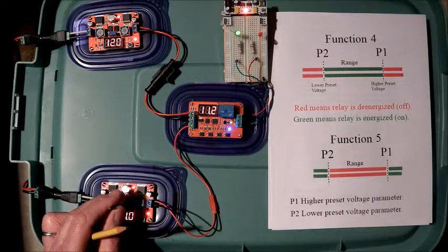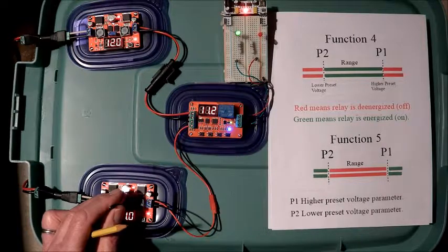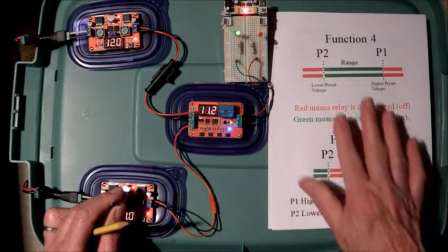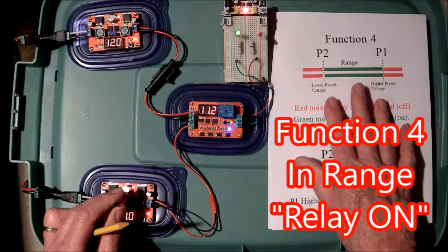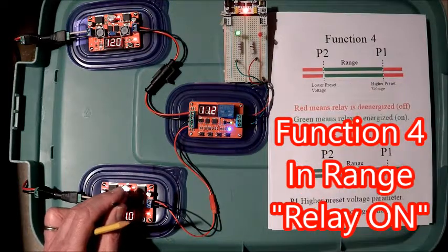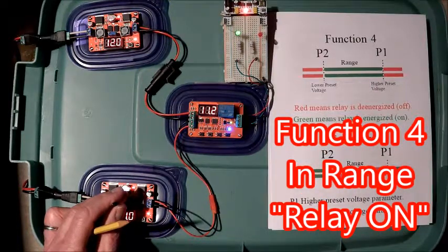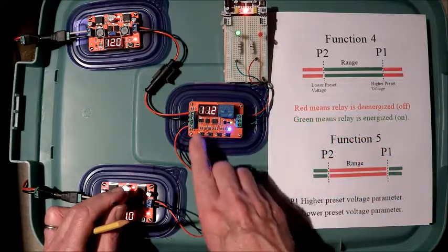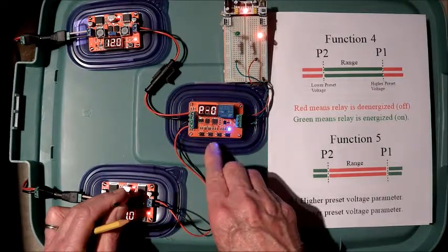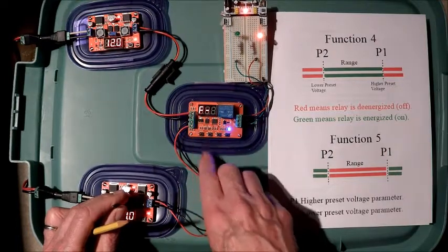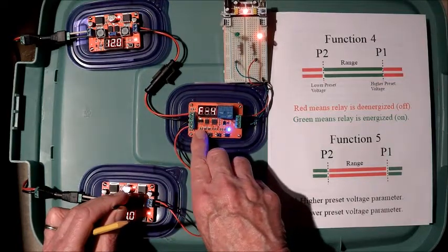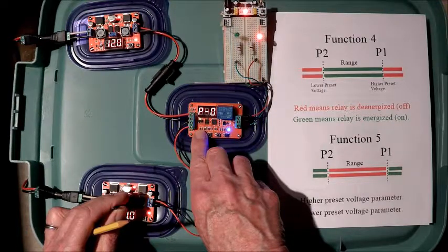Function 4. Function 4 and Function 5 are range functions. If the preset values are establishing the range, then if you're outside of the preset values, higher or lower, the relay will be off on Function 4. If you're within the range of the preset value, the relay will be on or energized. Coming out of Operational Mode. Go to the Function by hitting the Set button again. We're at Function 3. We're going to go to Function 4. Save that. Go back into Operational Mode.